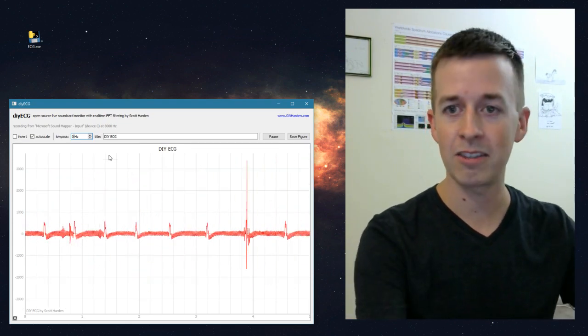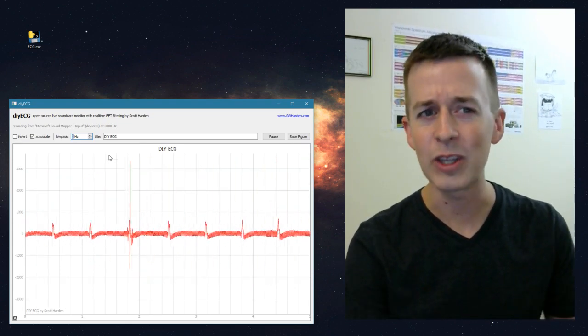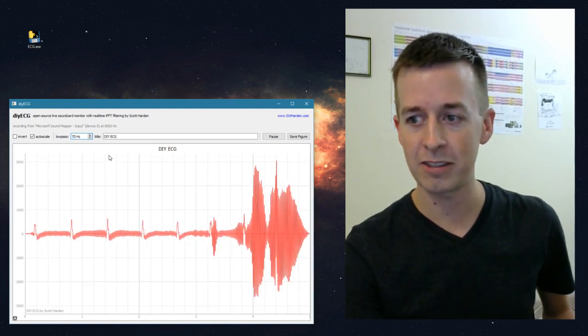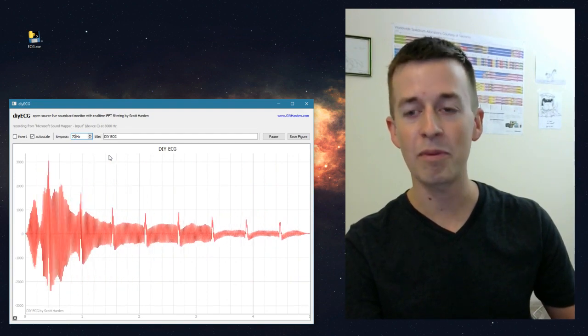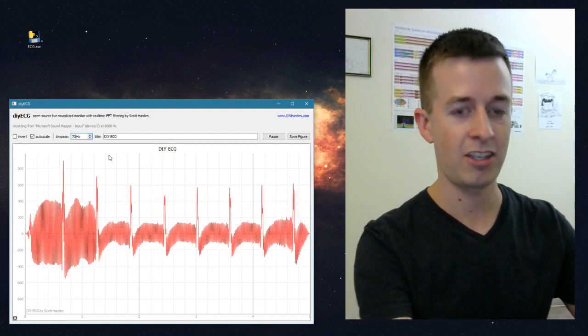And when I do that, I can adjust a cutoff frequency, or a low-pass frequency. So if I make it 70 hertz, then it allows everything under 70 hertz. So we can see the ECG, but also a lot of that 60 hertz noise.